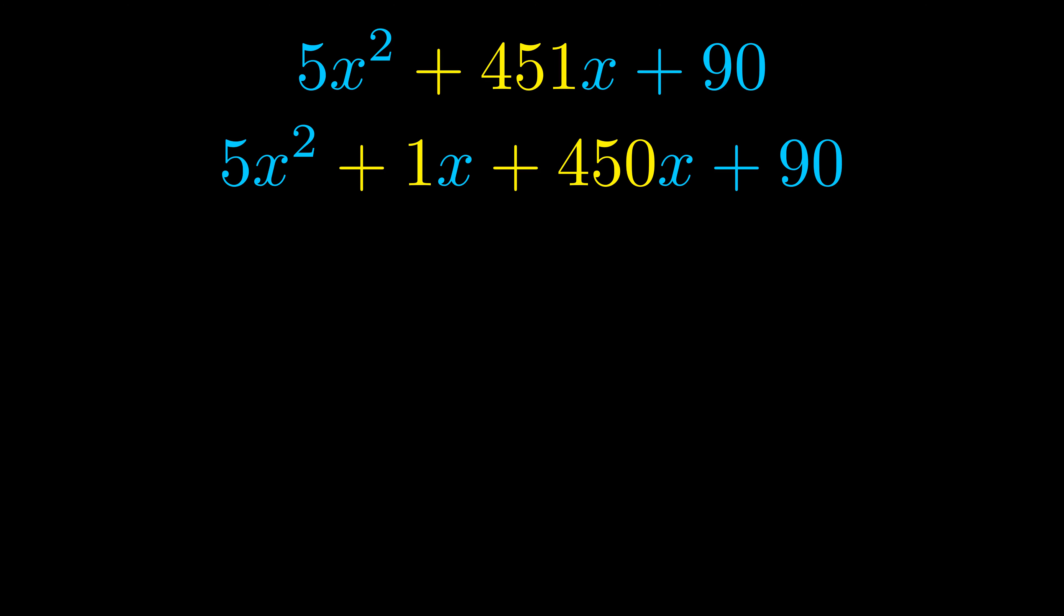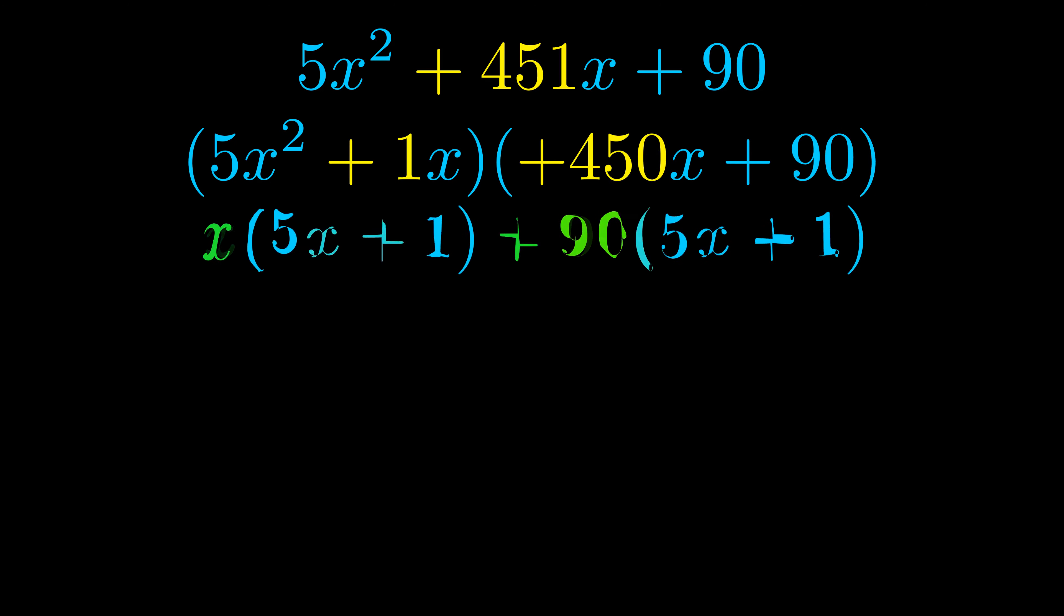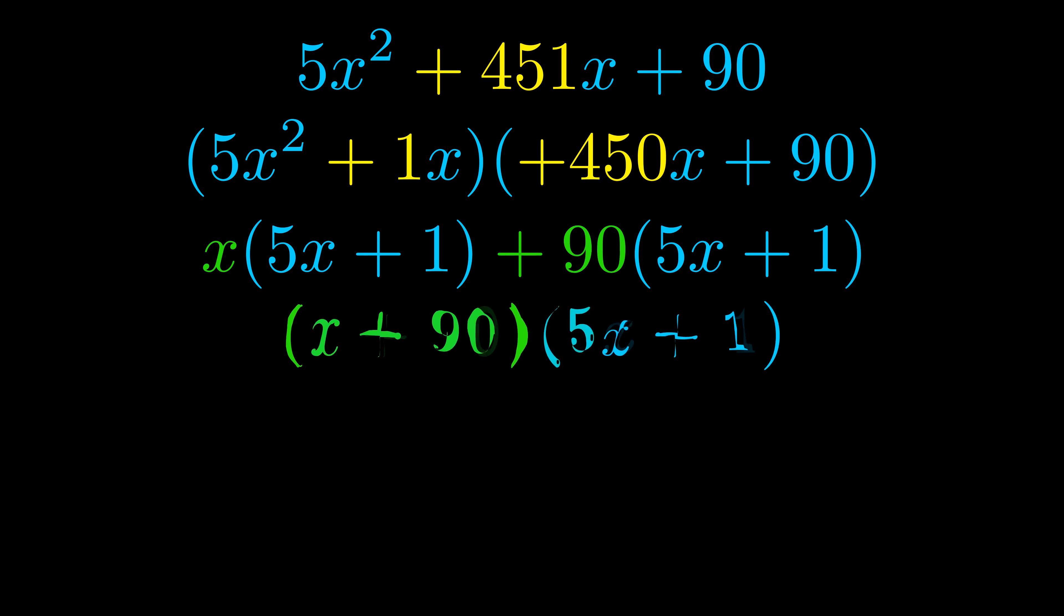Once we've done this we go ahead and we put parentheses around the first term and the last term and we do that so that we can take the greatest common factor out of both terms. We can see the greatest common factor is now outside in green. Notice also how what remains inside of the parentheses is the same in both cases. The blue values are the same.